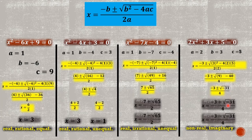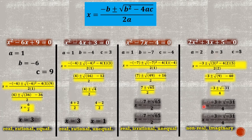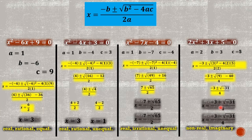The result is imaginary because the number inside the square root is negative — specifically negative thirty-one. The two roots are negative three plus square root of negative thirty-one over four, and negative three minus square root of negative thirty-one over four. We can write these using the imaginary symbol i, since the square root of a negative number is imaginary.